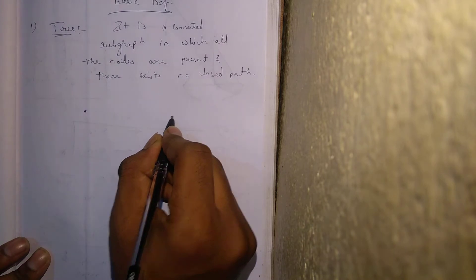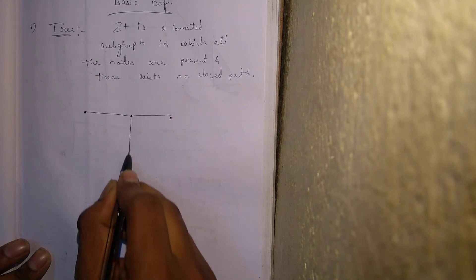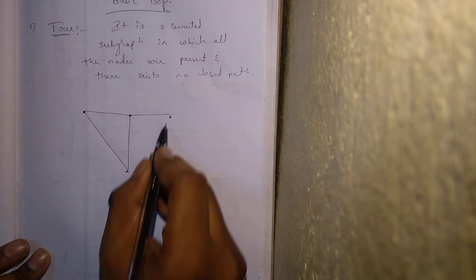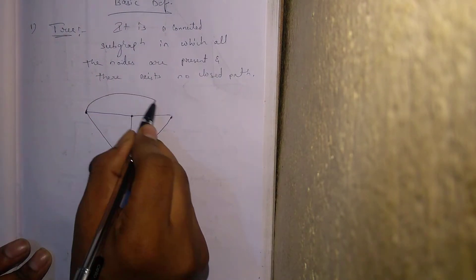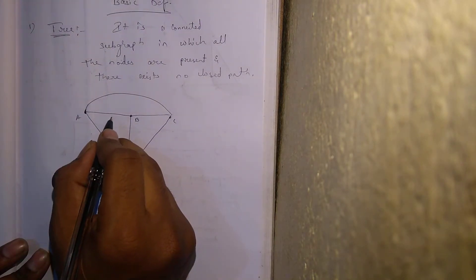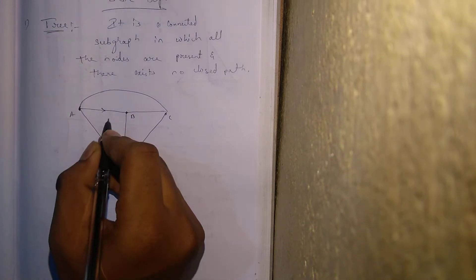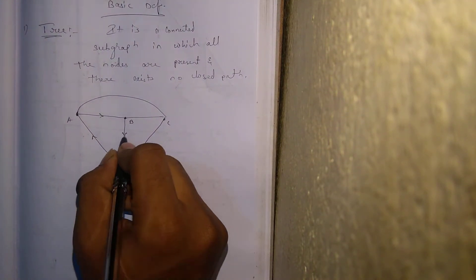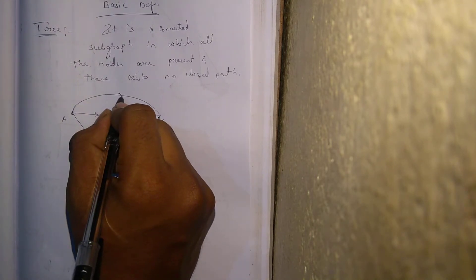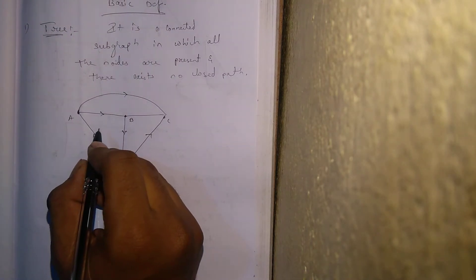Let us consider an example. I'll assume a random graph. This is my node A, node B, node C, node D. I'll mention current directions here — this is my current direction, this is my current direction, and so on. There are four nodes here, and I'll name each and every branch for my convenience.